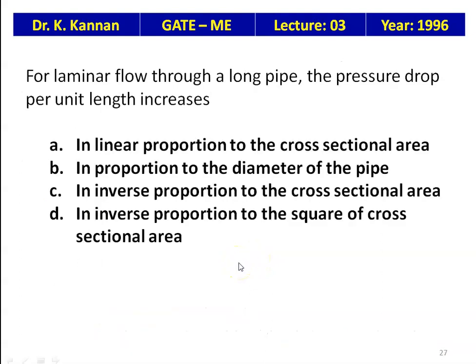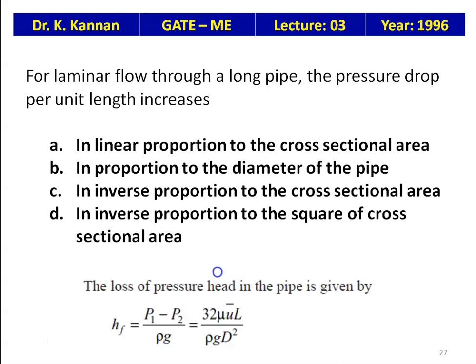For laminar flow through a long pipe, the pressure drop per unit length increases in — linear proportion to cross-sectional area, proportion to diameter, inverse proportion to cross-sectional area, or inverse proportion to square root of cross-sectional area? From h_f = 32μ·ū·L/(ρg·d²), with d² in the denominator and area A = (π/4)d², the pressure drop is in inverse proportion to cross-sectional area.